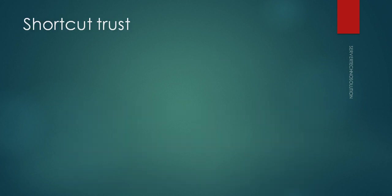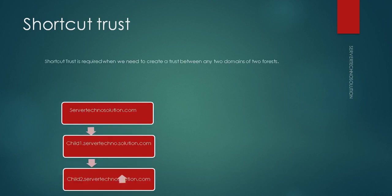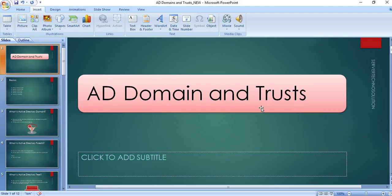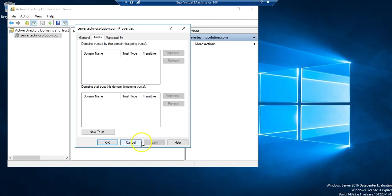Shortcut trust — similar to external trust — is where we create a trust between two specific domains of different forests. No one else needs to know about it; it is created purely according to our requirement. We create a trust only between two domains of two different forests as needed — that is called shortcut trust.